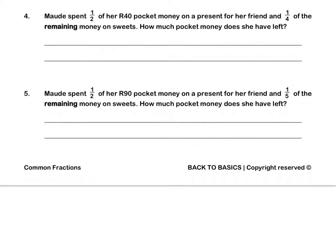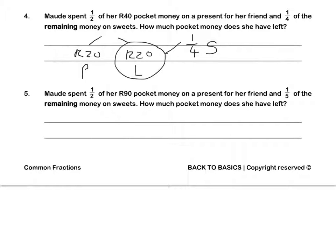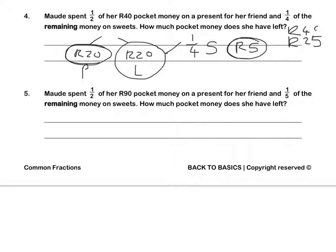Question 4. Maud spent 1 half of her 40 rand pocket money on a present for her friend and 1 quarter of the remaining money on sweets. She spent 20 rand on a present, leaving 20 rand. Of this 20 rand, she spends a quarter on sweets: a quarter of 20 rand is 5 rand. In total she spent 20 rand on a present and 5 rand on sweets, so 25 rand spent. 40 rand minus 25 rand means she has 15 rand of her pocket money left.